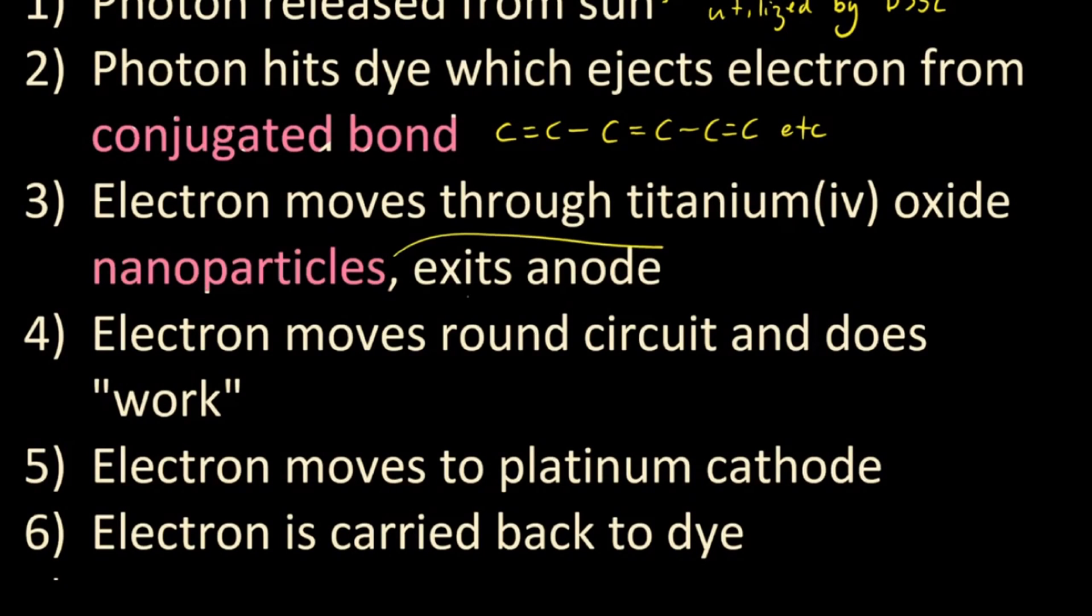The electron moves through the titanium(IV) oxide nanoparticles. They've asked about those nanoparticles. They have a high surface area, they're very small. So lots of dye can be made available for this solar cell to work, and it also means that different wavelengths of light will also work.